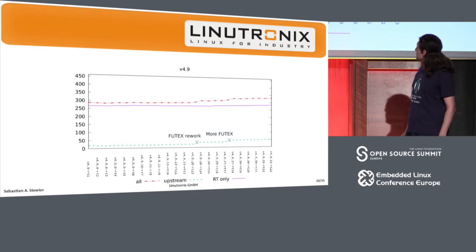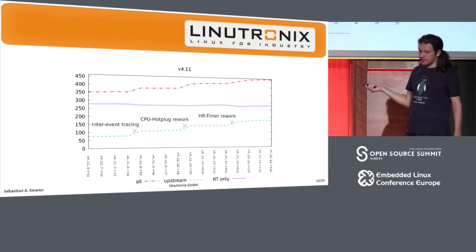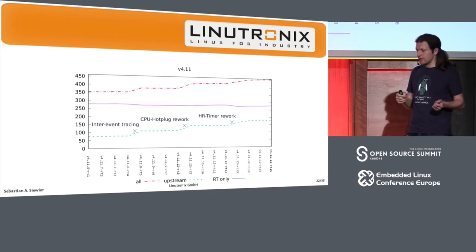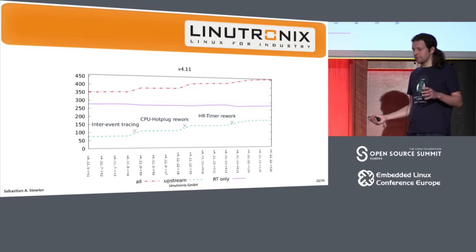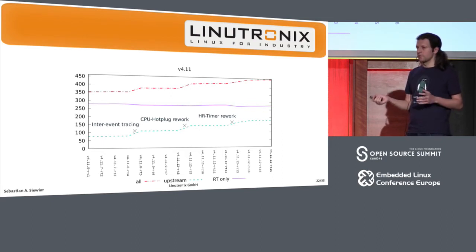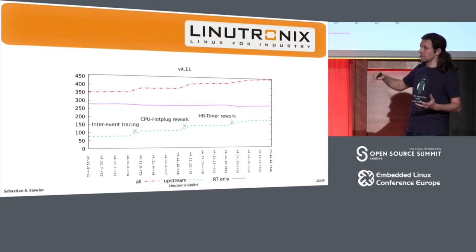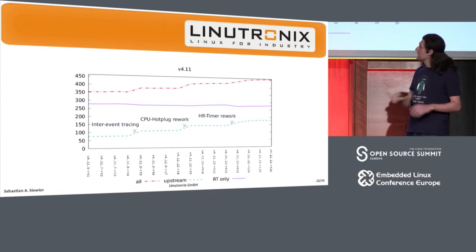After 4.9, we got even more active with 4.11. One part is interrupt tracing, which is done upstream. We had something similar in the RT tree as one huge patch back then. Steven and Tom are discussing those patches and they are targeting something around 4.15 or 4.16. So even if they went into the RT queue and the total count rose, once those patches go upstream, I don't have to carry them around.